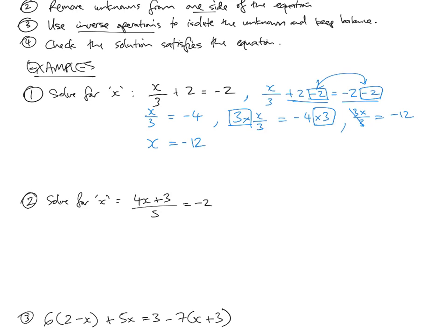So that is an example of applying the rules — the inverse operations. It's good to write your steps as you go so you don't skip anything, and so you can double check that you are balancing by doing the inverse operations on both sides. Now I'll do the check. Check if the solution satisfies the equation. Going back to the original equation: substituting x equals negative 12, we get negative 12 divided by 3 is negative 4, add 2, which is indeed negative 2. So our check has shown that the solution is correct.